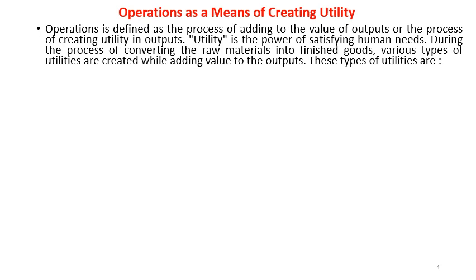In addition to value, we say we are adding value to the transformation process. Similarly, by adding value we are creating what is called utility in the outputs. Utility is the power of satisfying human needs. During the process of converting raw materials into finished goods, various types of utilities are created while adding value to the outputs. Let us see the different types of utilities.